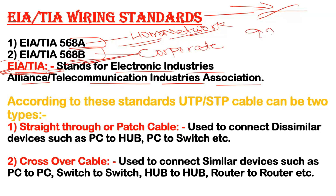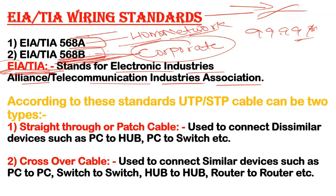99.99% of networks in the world are based on 568B. Because if you create your network using 568B, you can communicate with other 568B networks. Since the corporate standard is 568B, and everyone must connect to corporate, the internet, and broadband, 568B is used everywhere — so home networks must also use 568B.